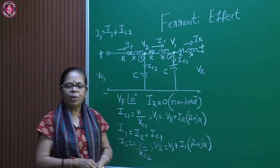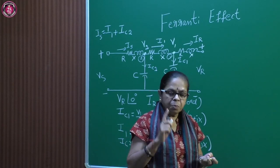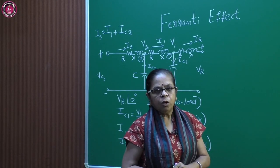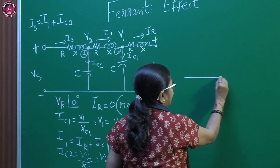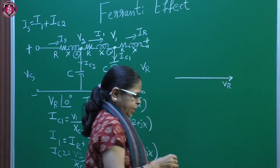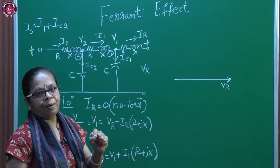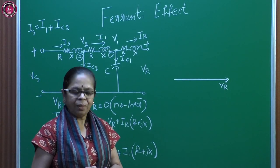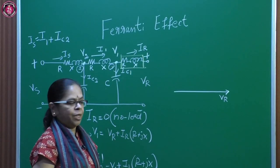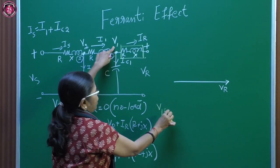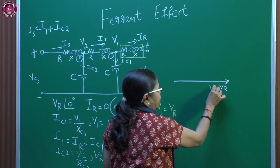Now let us see something very interesting. I will start drawing the phasor diagram — the reference is important. As before, I take Vr as the reference. I have taken the condition of no load, so IR = 0. Since IR = 0, there is no drop in the first section. Therefore V1 = Vr.